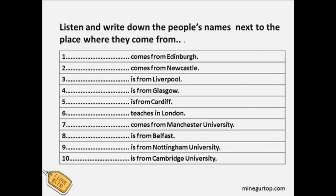Exercise 2: Where are they from? Task A: Look at the map of Britain. Please listen and write down the people's names next to the place where they come from. 1. My name is Kevin Smith, K, E, V, I, N, and I come from Edinburgh. Edinburgh is a very beautiful city. You're welcome to my city.